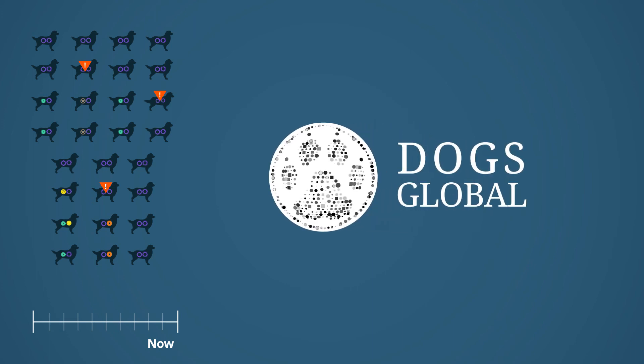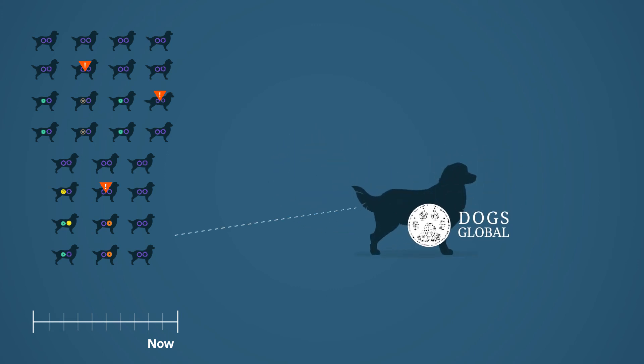Dogs Global assists in keeping breeds healthy or restoring health when it has declined. This platform utilizes all data on dogs worldwide: pedigree, DNA, shows, performance, and health.